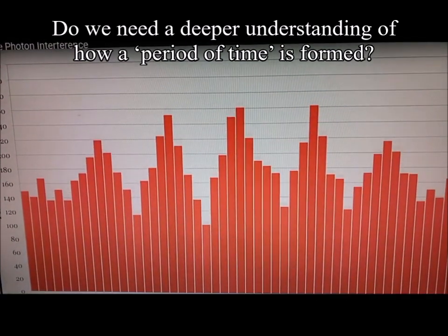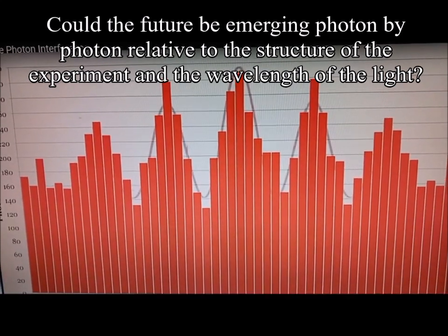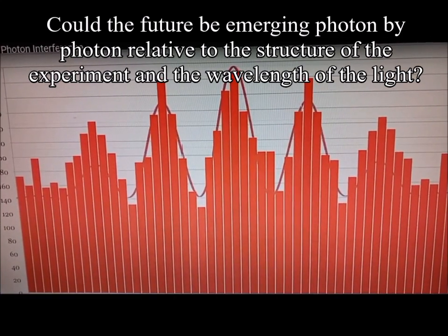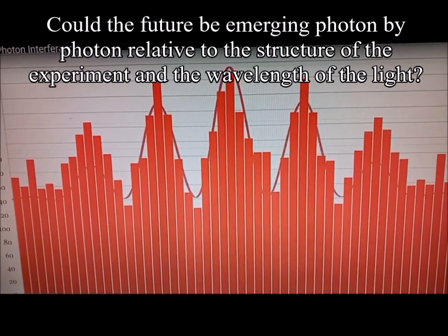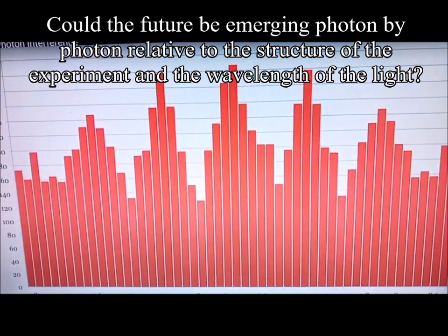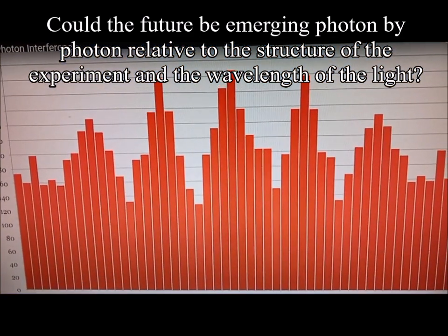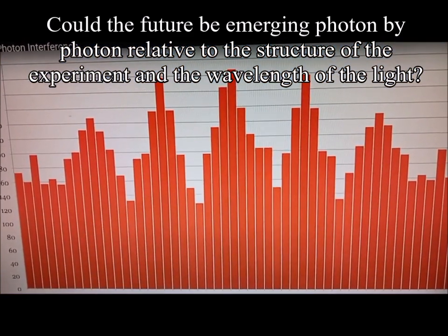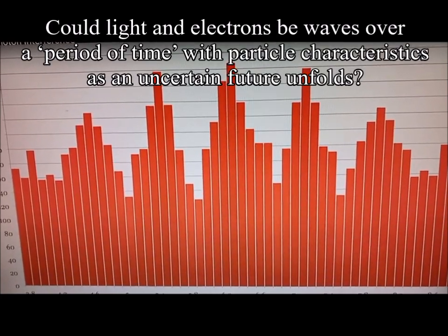Look at that. You can clearly see the same interference pattern that we got when we were sending tons of photons through, but we're getting it out of single photons. We're counting out individual photons. And that pattern is emerging as we aggregate the results over time. But how could this be happening?